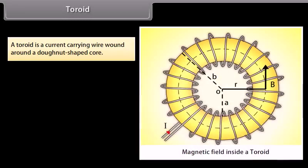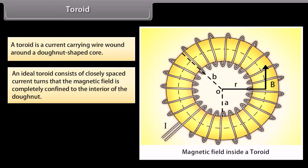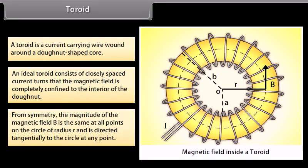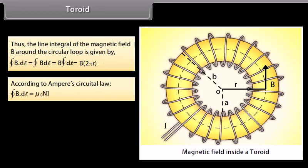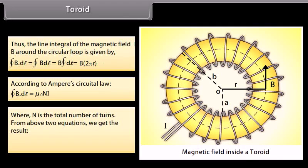Toroid: a toroid is a current carrying wire wound around a donut-shaped core. An ideal toroid confines the magnetic field completely to its interior. By symmetry, the magnitude of B is the same at all points on a circle of radius R, directed tangentially. The line integral of B around the loop equals B times 2 pi R. By Ampere's Circuital Law, closed integral of B dot dL equals mu_0 NI, giving the result B equals mu_0 NI divided by 2 pi R.